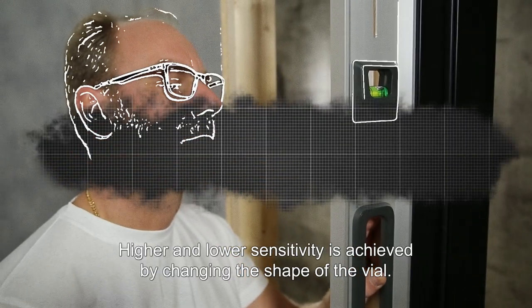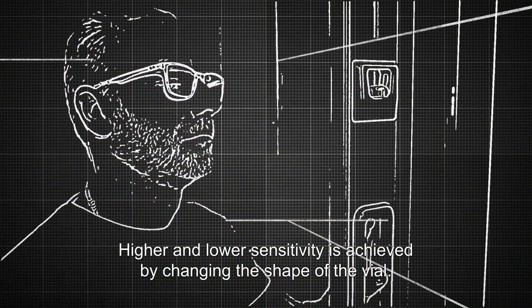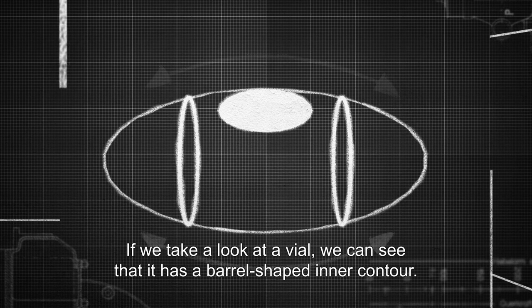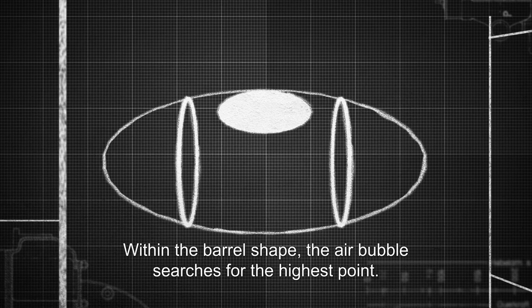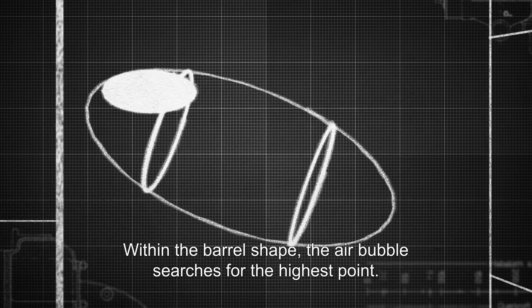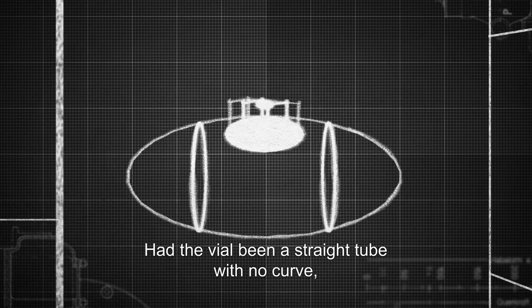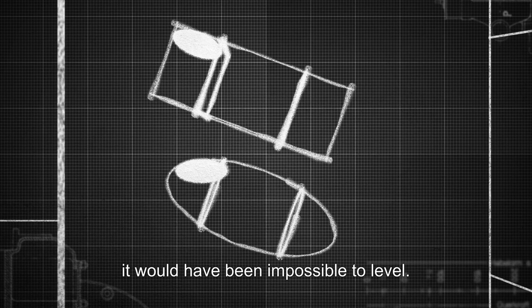Higher and lower sensitivity is achieved by changing the shape of the vial. If we take a look at a vial, we can see that it has a barrel shaped inner contour. Within the barrel shape, the air bubble searches for the highest point. Had the vial been a straight tube with no curve, it would have been impossible to level.